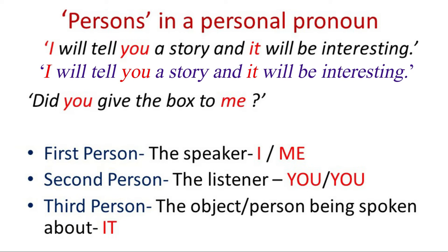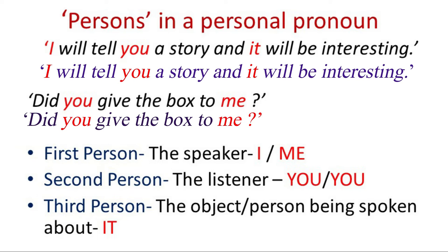Let us take another example. Here we have two pronouns: you and me. You is the listener or the person being addressed, and me refers to the speaker. Thus, we find that both I and me are used by the speaker in different sentences. I is used as a subject in a sentence while me is used as an object — that is, the one which is receiving action.